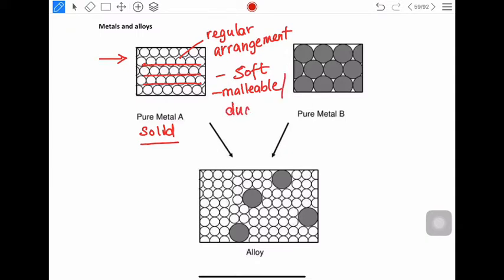So malleable and ductile. Malleable means it can be changed into different shapes without breaking. Ductile means it can be made into wires without breaking.